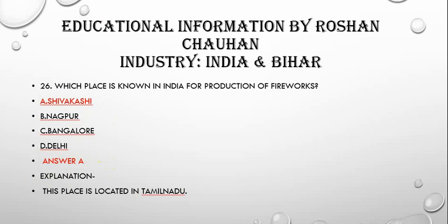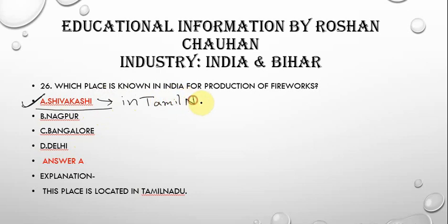The next question is: which place is known in India for production of fireworks? The correct answer is Sivakasi, which is in Tamil Nadu. Sivakasi is known in India for production of fireworks.